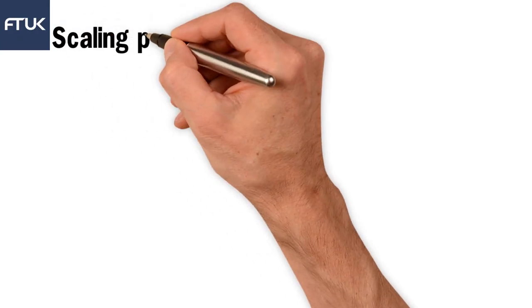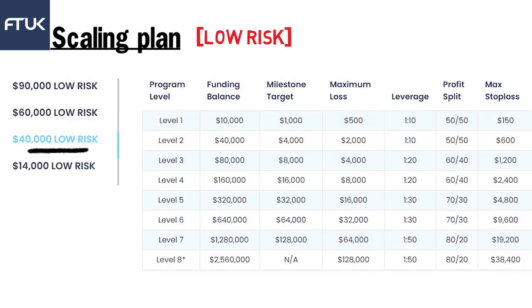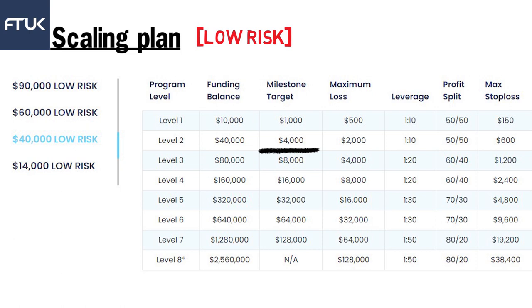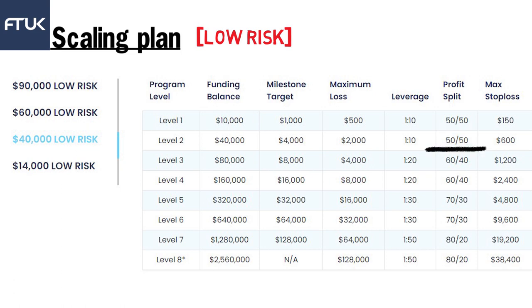Now let's look at the scaling plan. In the Lorix model, say you've taken a 40,000 account — they increase it level by level. In level one you get a funding balance of 10,000, with a milestone target of 10% (i.e., 1,000). If you achieve that, you move to level two with 40,000. If you hit 10% there, you go to level three. They increase account size, leverage, and profit split progressively with each level, as shown in their chart.